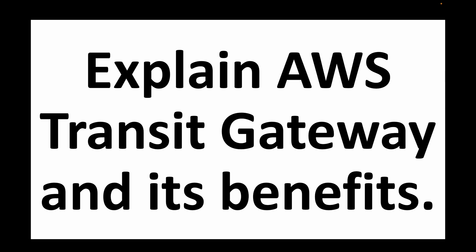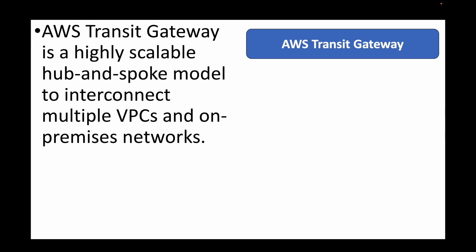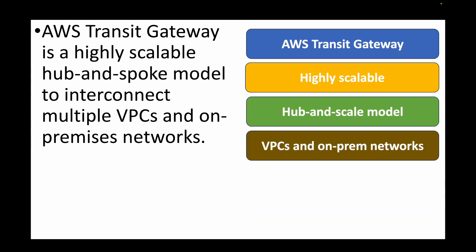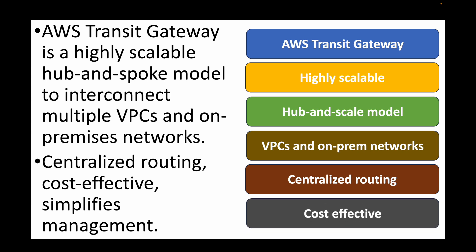The next question is: explain AWS Transit Gateway and its benefits. Transit Gateway is a highly scalable hub-and-spoke model that helps connect multiple VPCs and on-premises networks. It simplifies networking by acting as a central routing hub. This is especially useful for large-scale architectures — providing centralized routing, cost effectiveness, and simplified VPC management.